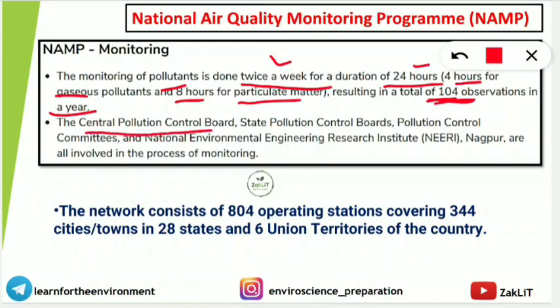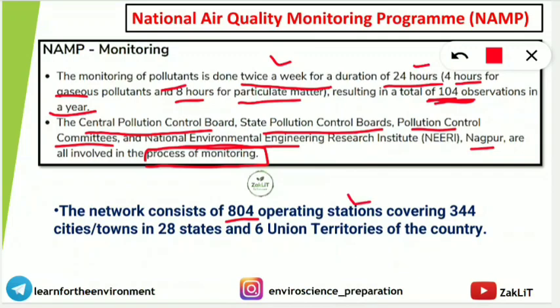The monitoring is carried out by the Central Pollution Control Board (CPCB), State Pollution Control Boards (SPCBs), Pollution Control Committees (PCCs), and NEERI — the National Environmental Engineering Research Institute, Nagpur. Currently, the NAMP network has 804 operating stations across 344 cities and towns in 28 states and 6 union territories of India.